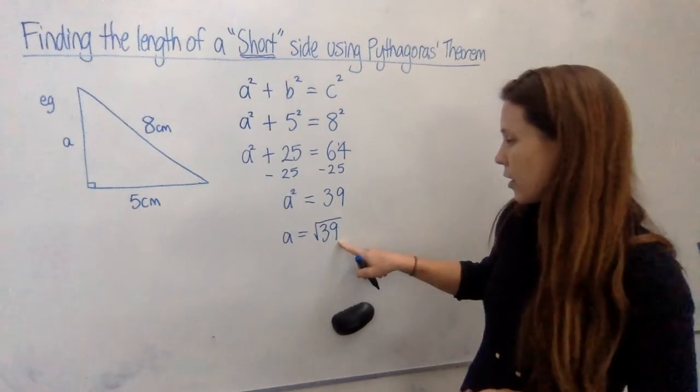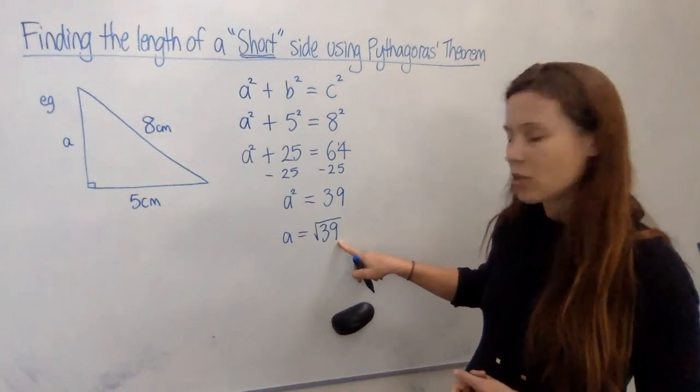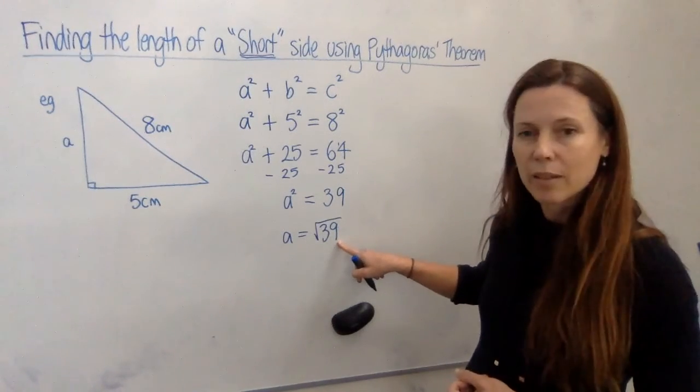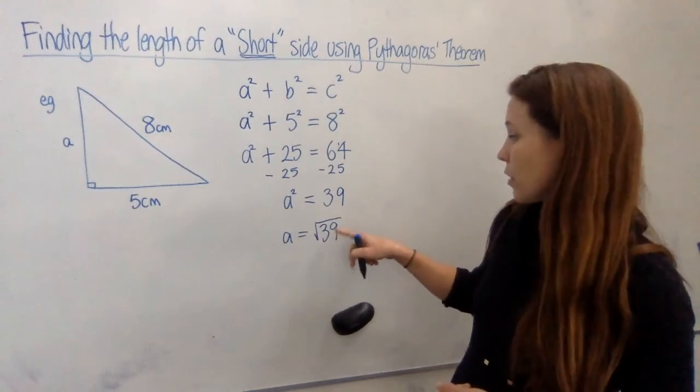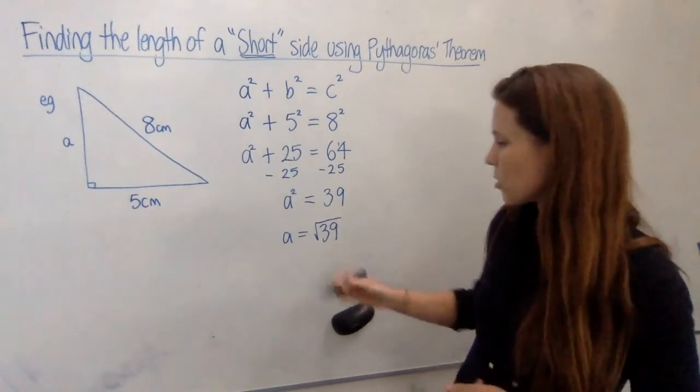Now this is not an exact whole number, an integer. It's going to be six and a bit, because I know the square root of 36 is six, square root of 49 is seven, so it's somewhere between those two.